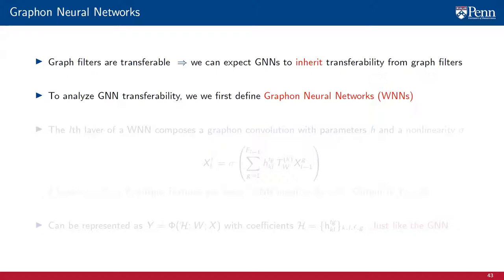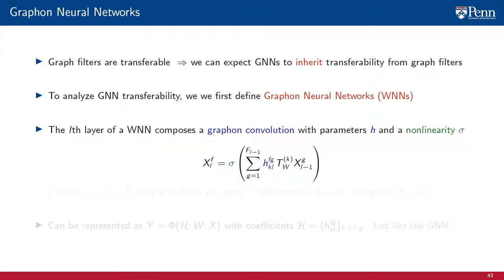In particular, we will use graphon signal processing to define graphon neural networks, or WNNs. The WNN can be defined as a layered architecture where each layer composes a graphon convolution with parameters H and a non-linearity sigma.